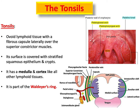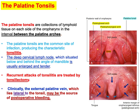Lateral to the capsule there are a couple of structures, but notably the superior constrictor muscle of the pharynx. For more detail on pharyngeal muscles you can watch the pharynx lecture. This superior constrictor muscle is covered internally by the pharyngeal basilar fascia and laterally by the buccopharyngeal fascia, so these two fasciae cover the pharyngeal constrictor muscle.